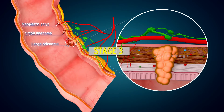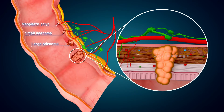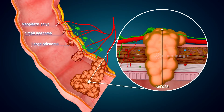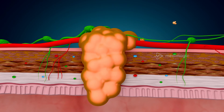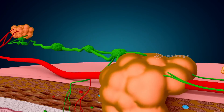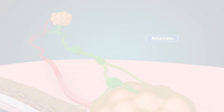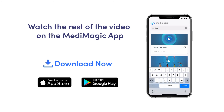Stage 3: The tumor now invades the serosa and grows into pericolorectal tissues, transforming into malignant cell carcinoma. At this stage, the tumor cells infiltrate into blood vessels and lymphatic vessels and are carried to other parts of the body, which is called the metastatic stage.